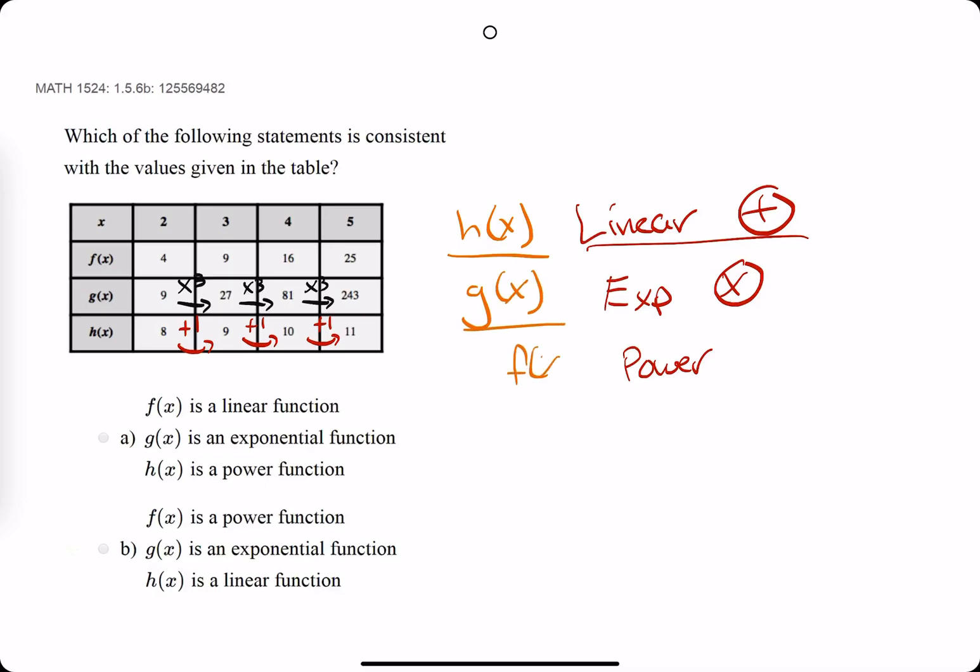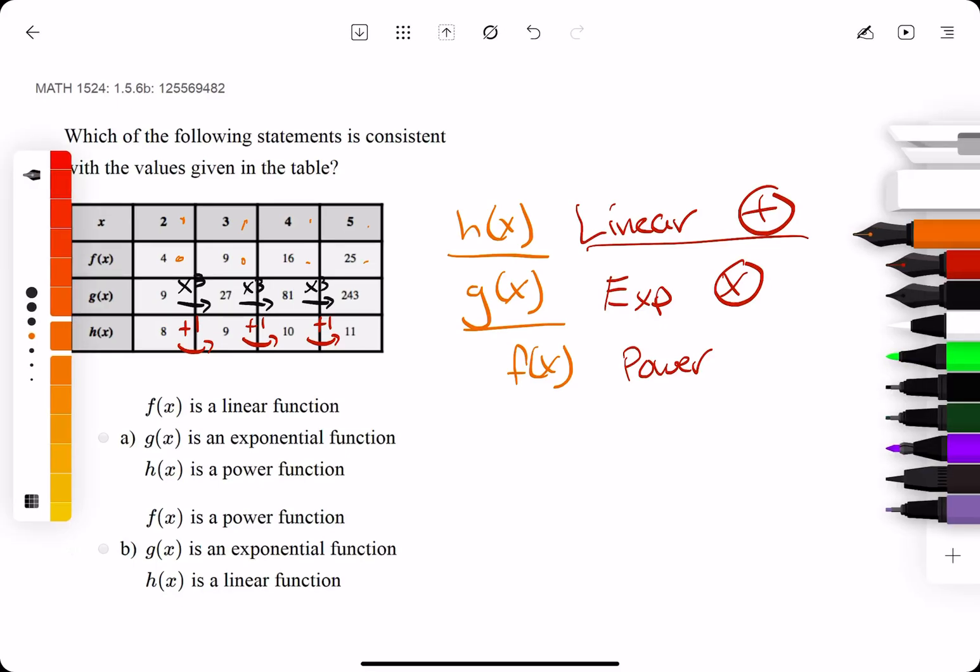So we see 2 gives us 4, 3 gives us 9, 4, 16, 5, 25. Similar example as we may have seen before.